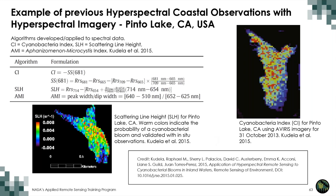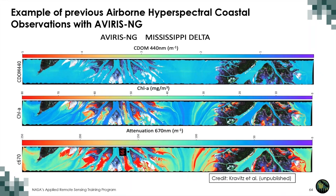Experimental data from AVIRIS-NG over the Atchafalaya–Mississippi Delta as part of the Delta-X campaign was used to calculate CDOM, chlorophyll, and beam attenuation at 670 nanometers. Only 66 in-situ data points were collected during the campaign, but estimated values fall within the expected range for the area. Results look promising after applying sun glint removal processes, though further work is needed.